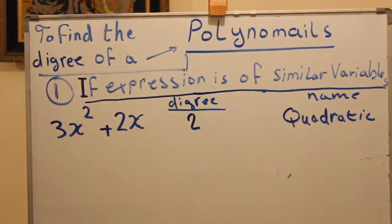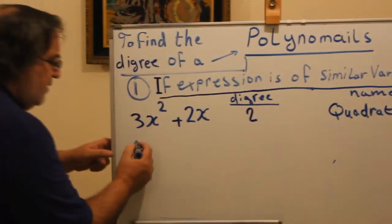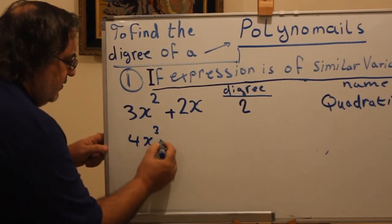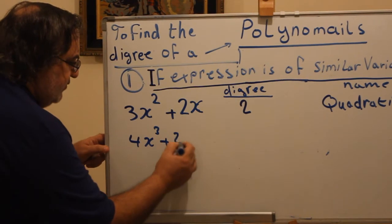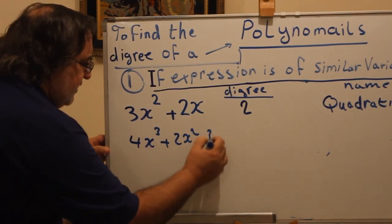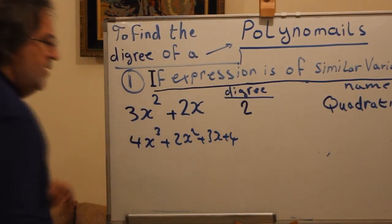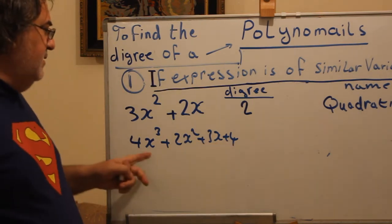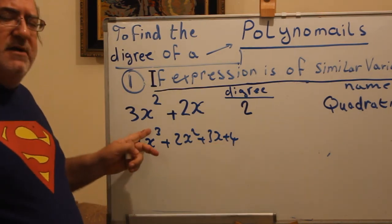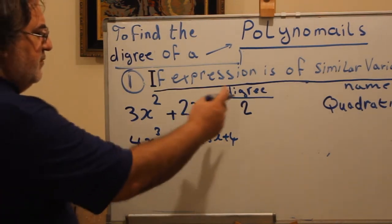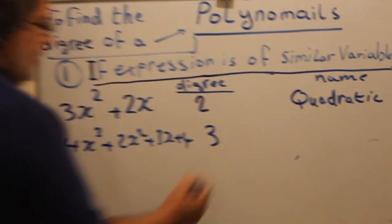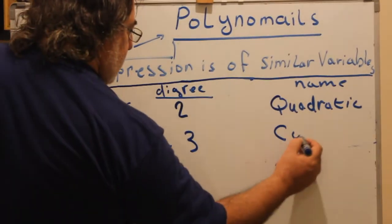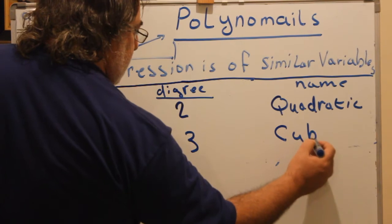Now if we have 4x cubed plus 2x squared plus 3x plus 4 — still the same variable. The highest power is 3. So the degree is 3, and we call it cubic.